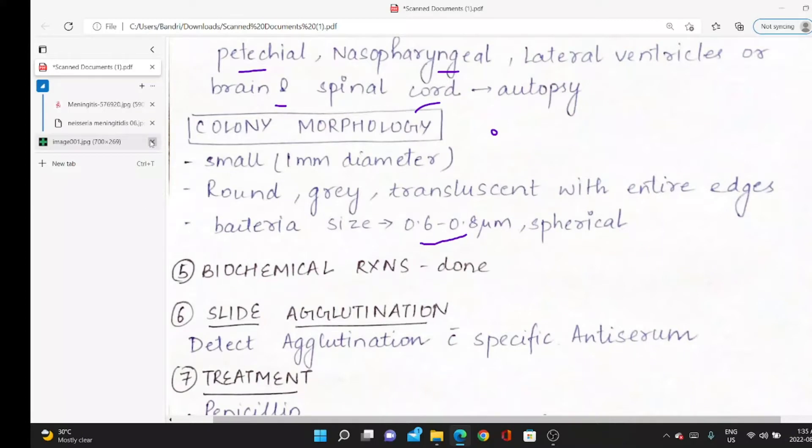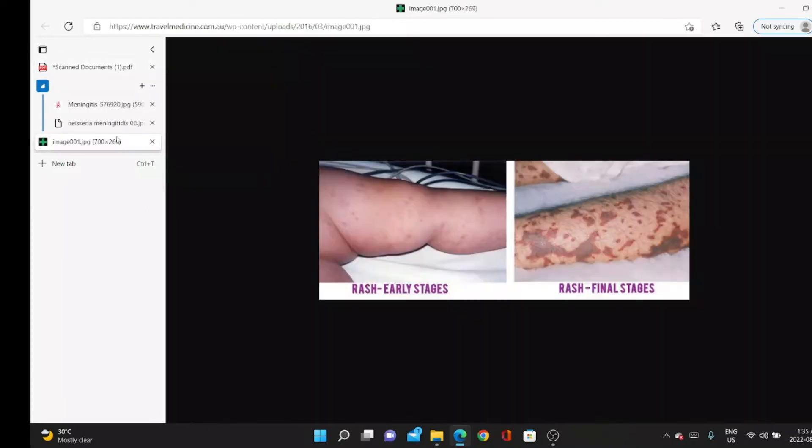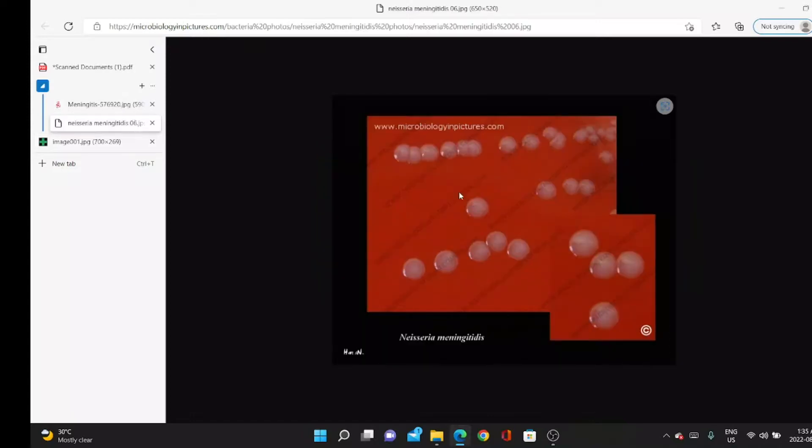Colony morphology: this is rounded, gray, and glistening. This is blood agar—rounded, gray, and glistening. These are colonies.